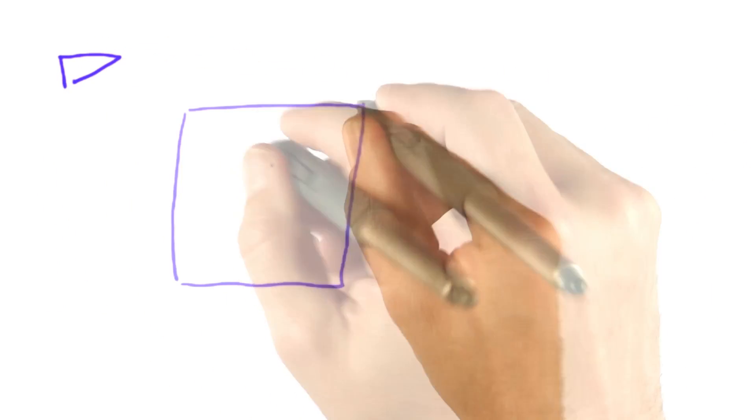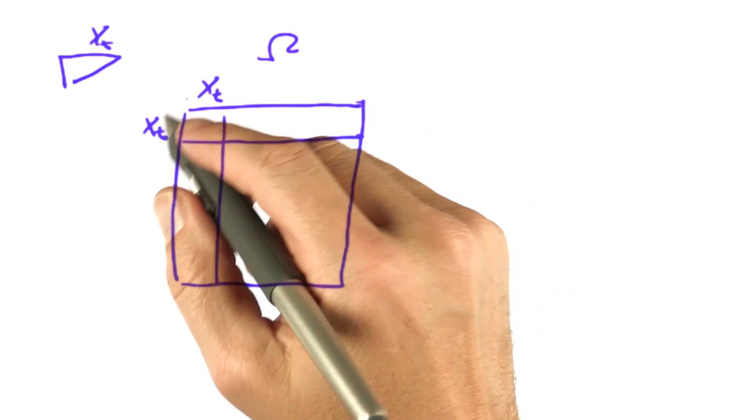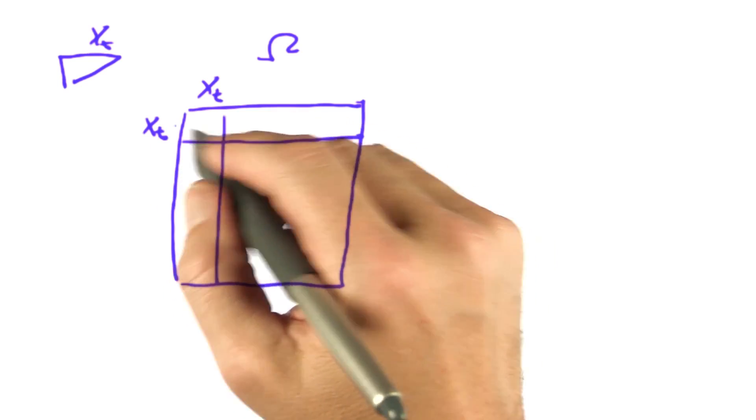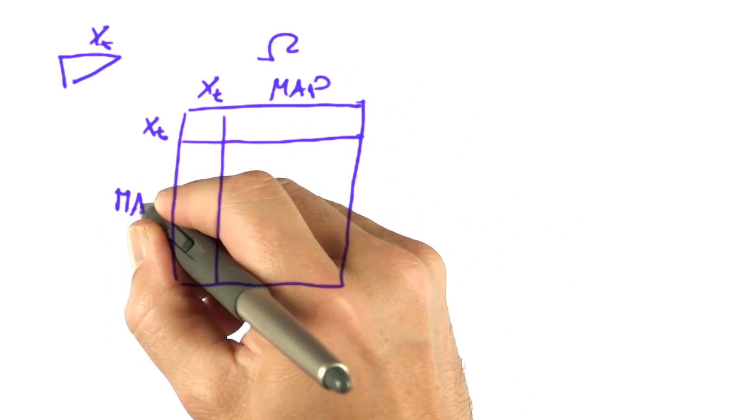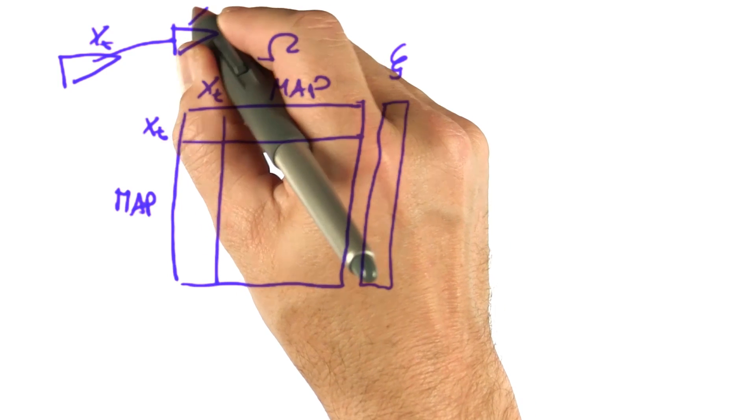Suppose we have a robot position and we have a matrix omega that only contains the information pertaining to one position. If the position is one-dimensional, it's just one row and one column, whereas we might have many different entries for the map. So suppose the robot moves to a new position. Let's call it xt plus 1.